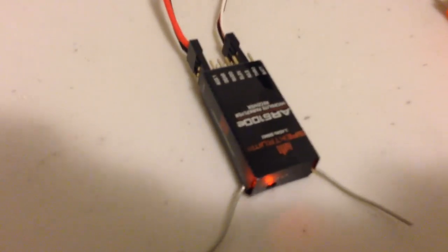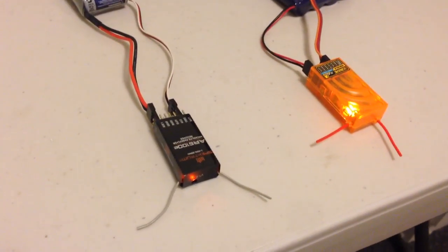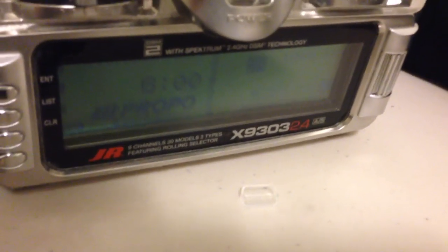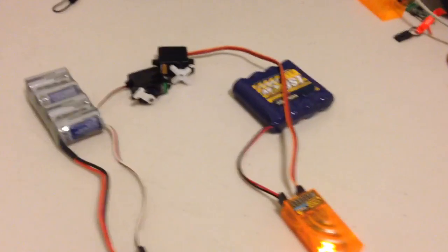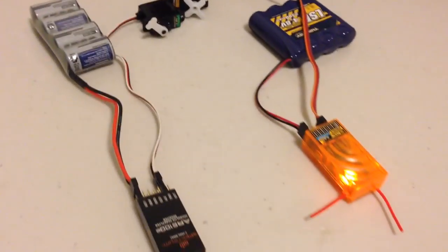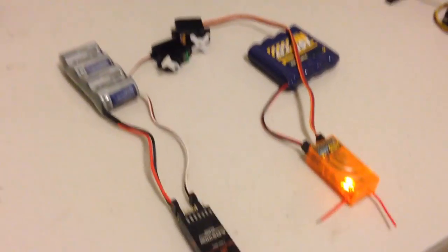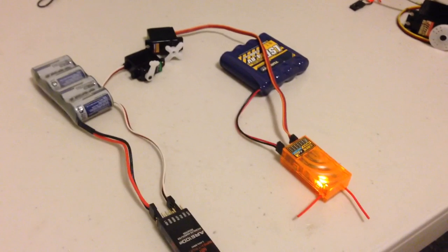This is the AR6100E, which is fairly old and it's only capable of DSM-2. I've got both receivers bound to my JR9303, which is a DSM-2 only transmitter, so they're both operating in the DSM-2 protocol. I have a servo connected to the throttle channel on each receiver, and as you can see, they're operating fine.